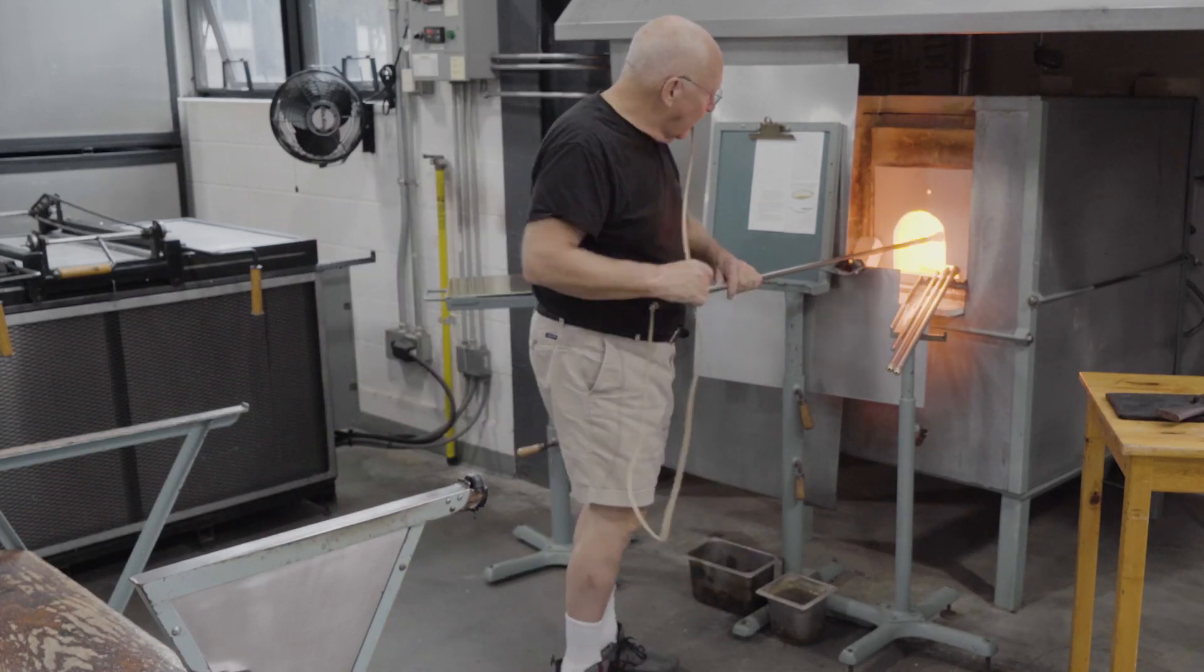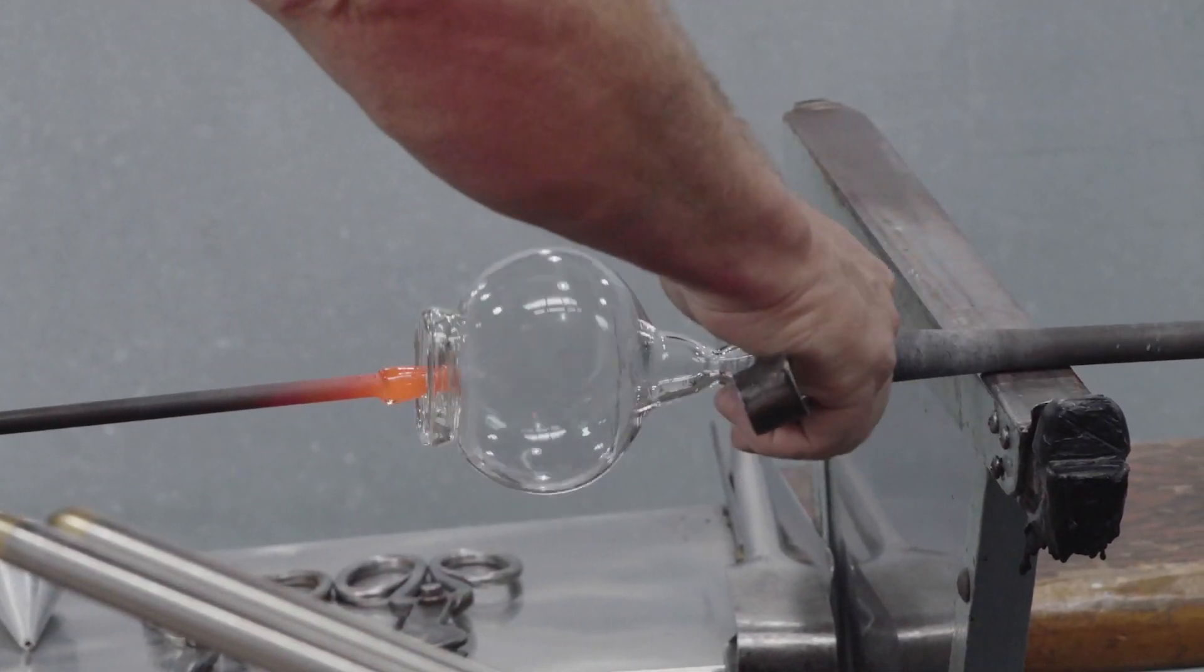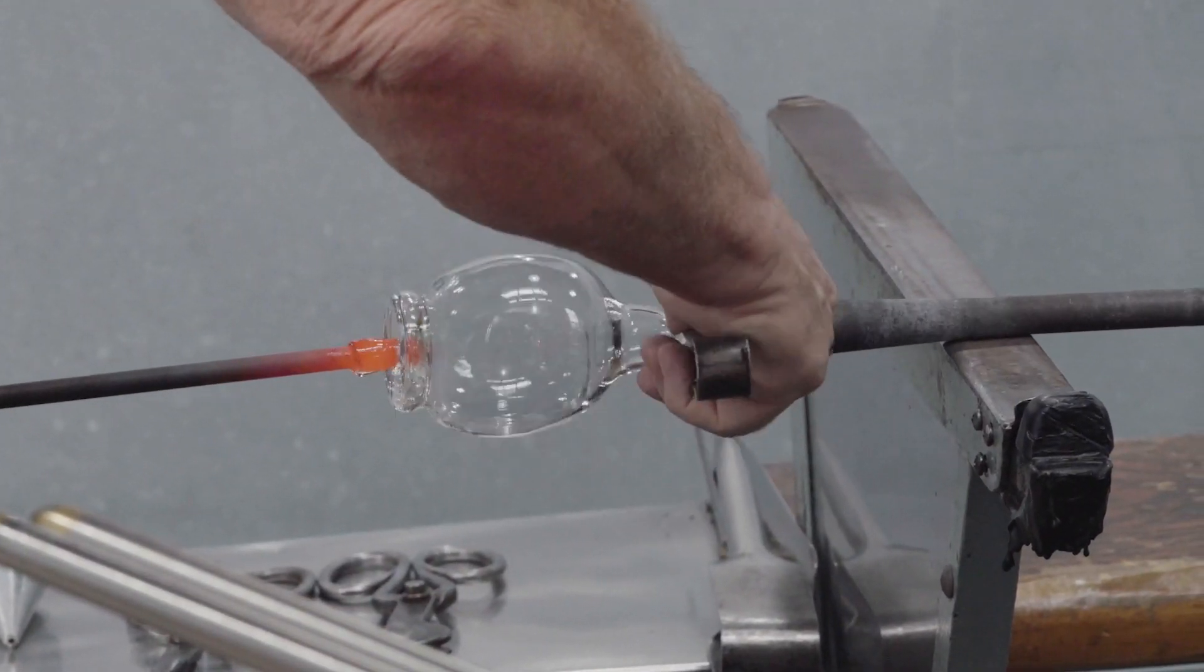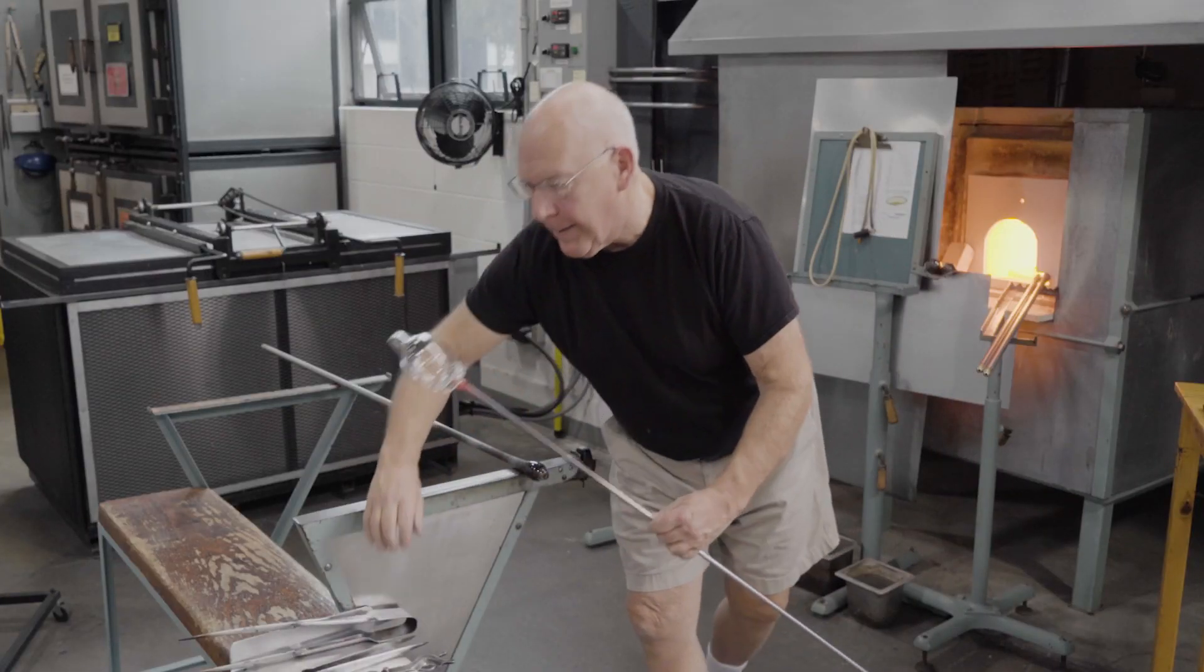The punty side is cooled, and the transfer to the punty takes place. The tips of the pincers are held in the constriction, and with a little tap, the neck breaks cleanly.